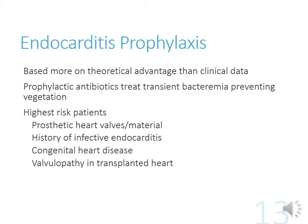For endocarditis prophylaxis — preventing infection before it develops — we don't have definitive clinical data but give antibiotics to prevent bacteremia before vegetation can form. This is done in high-risk patients: those with prosthetic heart valves, history of infective endocarditis, some congenital heart disease with altered anatomy, valvulopathy with a transplanted heart.